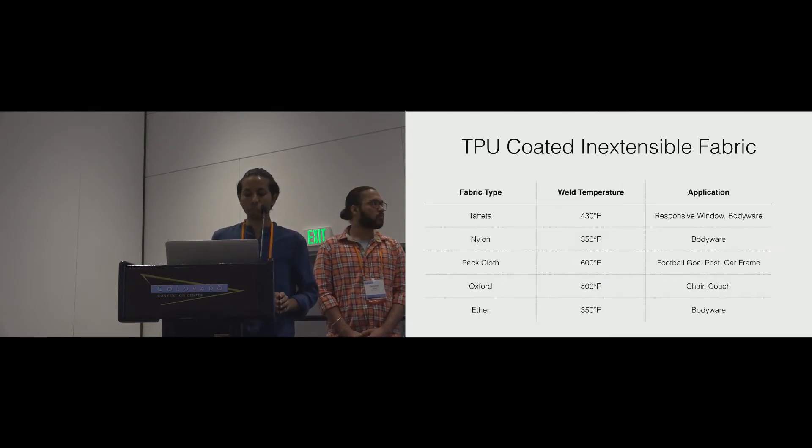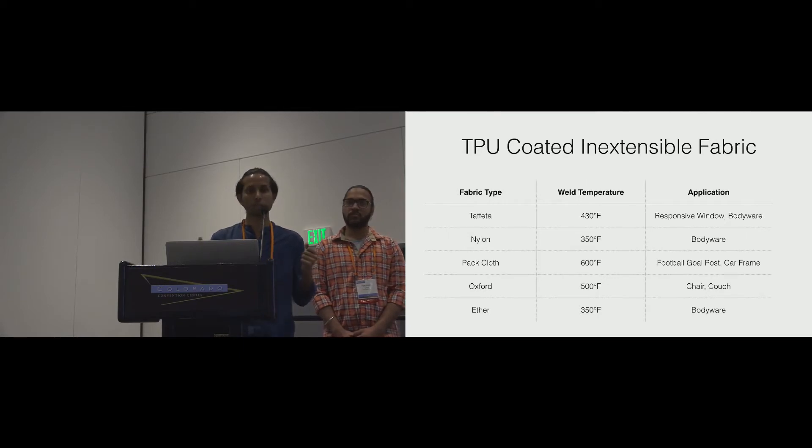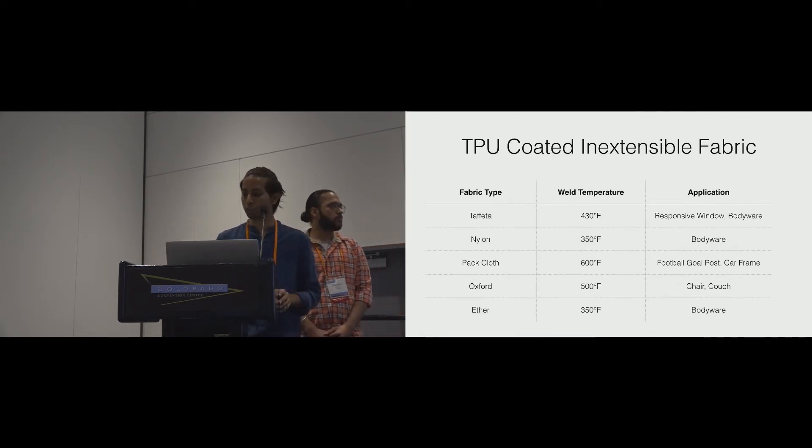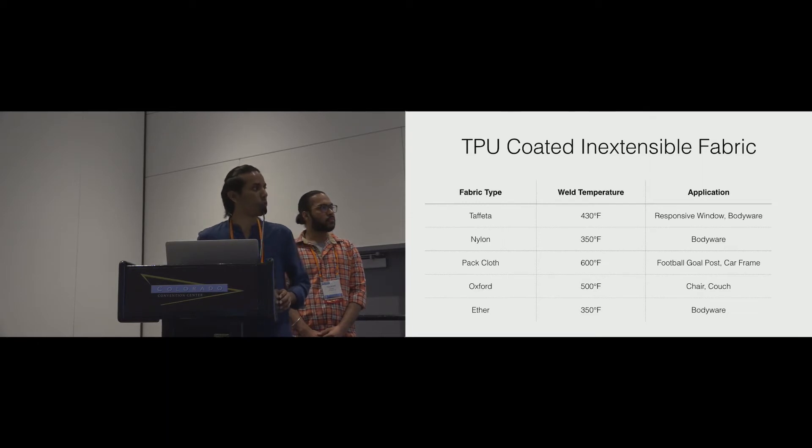And for our purposes where scale and load-bearing capacities is desired, we use an inextensible material, similar to what's being used in the industry. But however, the material is coated with a special plastic which melts when applied with heat. And as you can see from this table, we can use materials with different strengths for different applications.